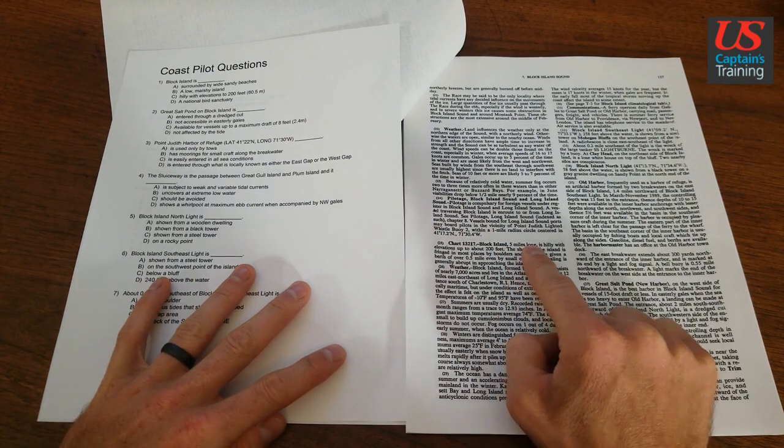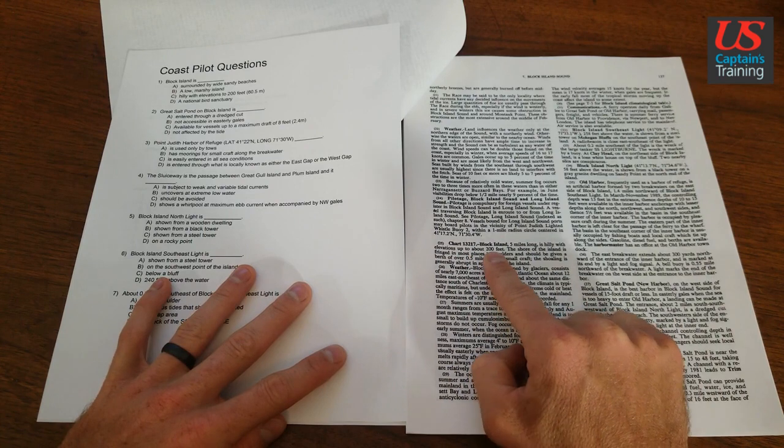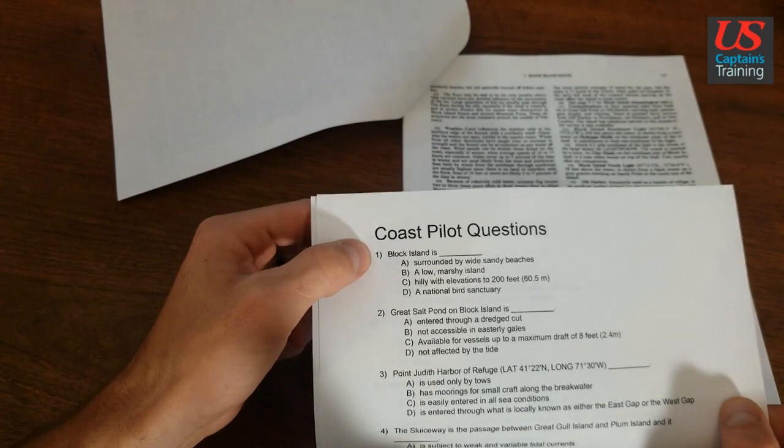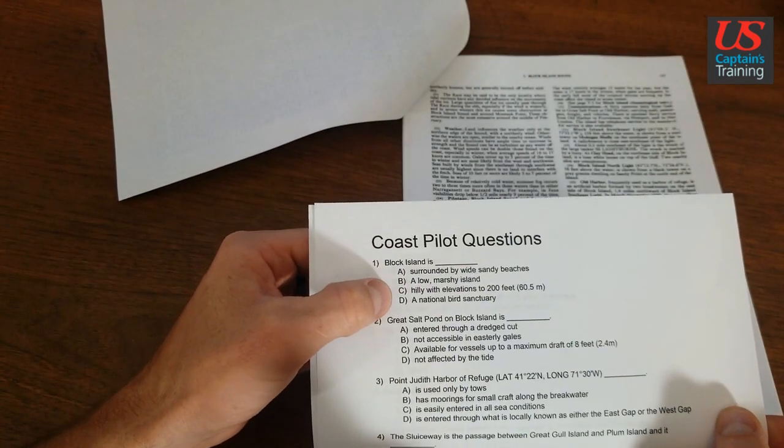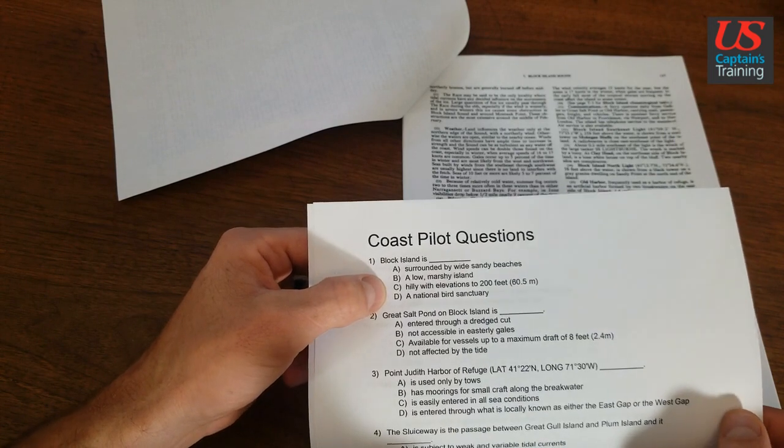Here it says 5 miles long, is hilly with elevations up to 200 feet. Well that looks like one of our answers. Look at that, the very first one. Block Island is hilly with elevations up to 200 feet.